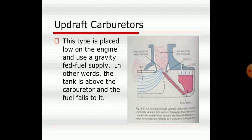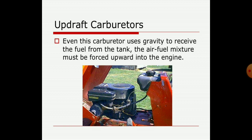In the updraft carburetor, this type is placed low on the engine and uses a gravity fuel supply. The main reservoir or fuel tank is above and the carburetor is at the lower side, so gravity is used as the force for fuel supply. The tank is above the carburetor and the fuel falls into it. This type is used in two-wheelers on a small scale. The air-fuel mixture must be force-forwarded to the engine, and that is why venturi-type mixing of proper air-fuel mixture is essential in the updraft carburetor.